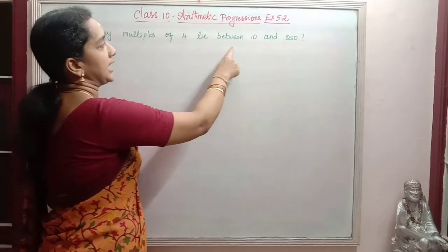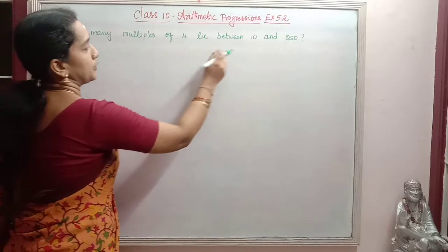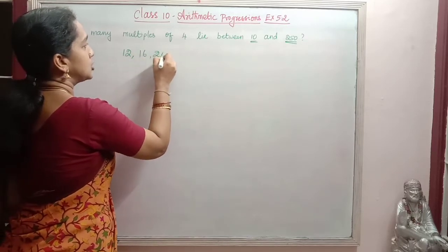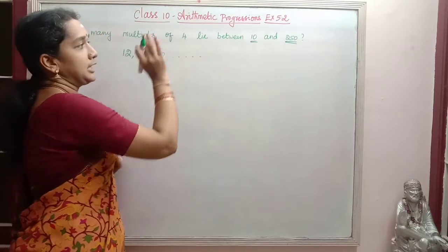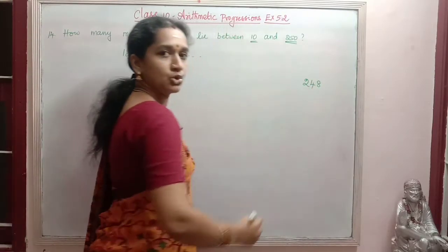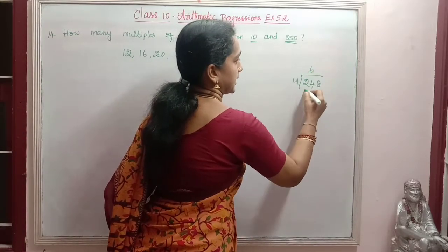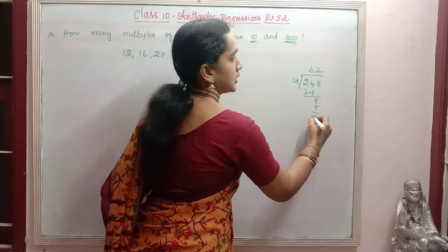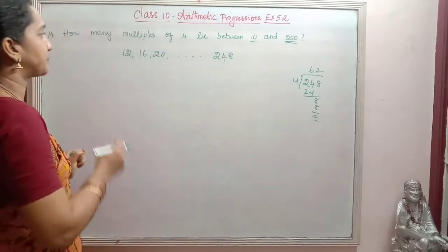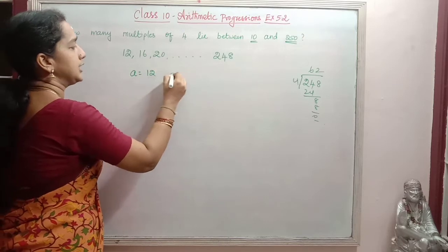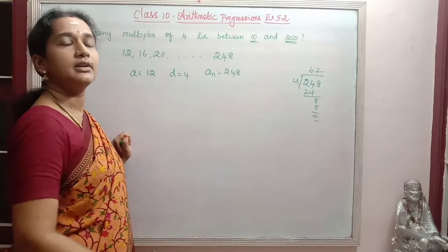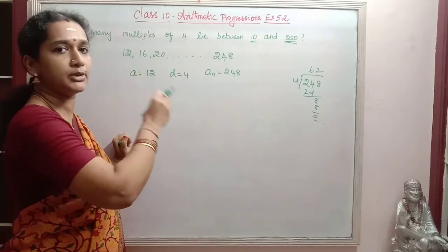The next sum: how many multiples of 4 lie between 10 and 250? The multiples of 4 start from 12. Then 16, 20, and so on. The last multiple of 4 less than 250 is 248, since 4 × 62 = 248.